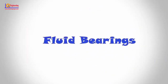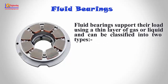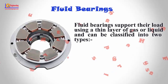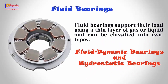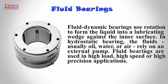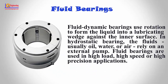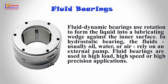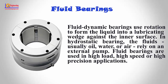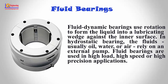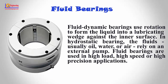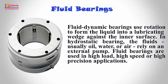Fluid bearings support their load using a thin layer of gas or liquid and can be classified into two types: fluid dynamic bearings and hydrostatic bearings. Fluid dynamic bearings use rotation to form the liquid into a lubricating wedge against the inner surface. In hydrostatic bearings, the fluid — usually oil, water, or air — relies on an external pump. Fluid bearings are used in high-load, high-speed, or high-precision applications.